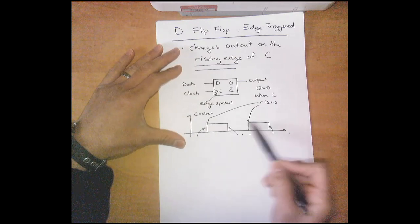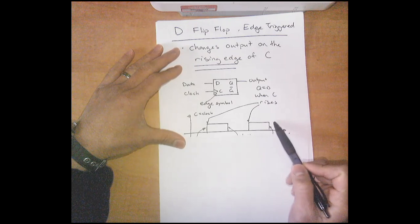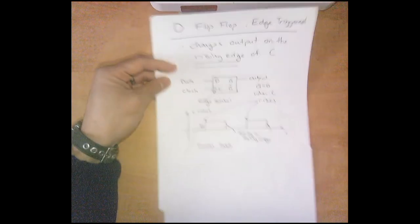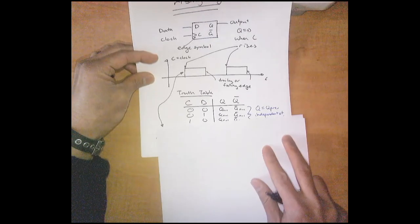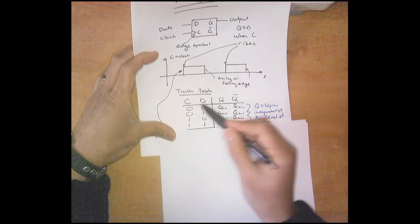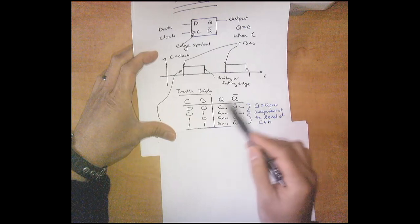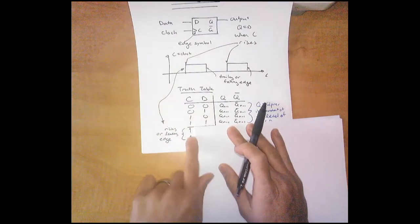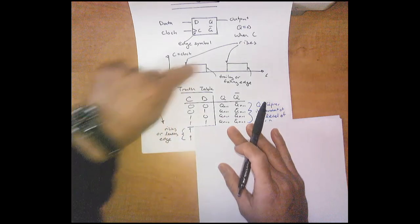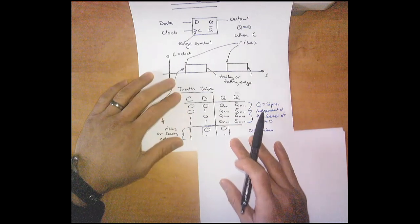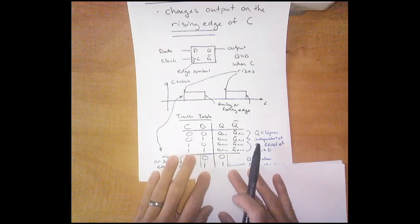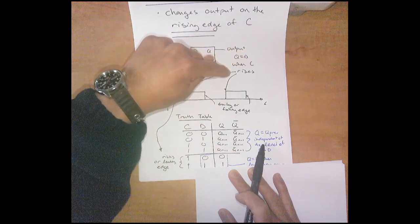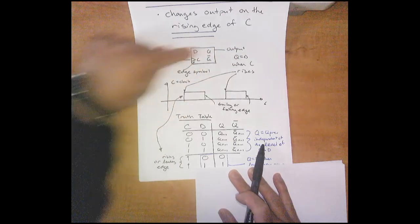Here's a clock going up, down, up, down. Only on the rising edges does Q equal the data. The truth table shows that for any combination of clock and data that isn't a rising edge, Q and Q bar just hold their previous values. Only when the up-arrow rising edge occurs does Q become the data. This up-arrow symbol in the truth table represents the rising edge. Q becomes the data when the clock rises.